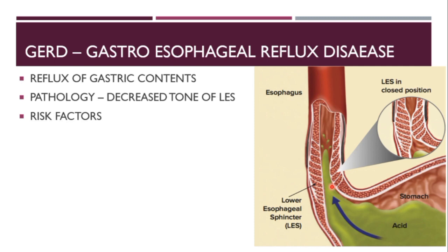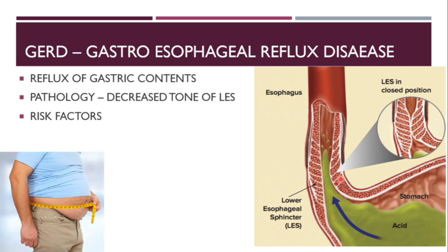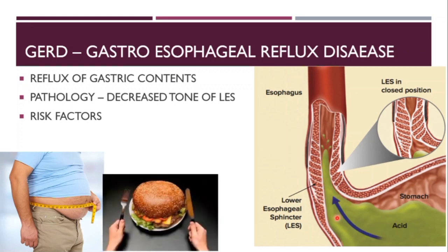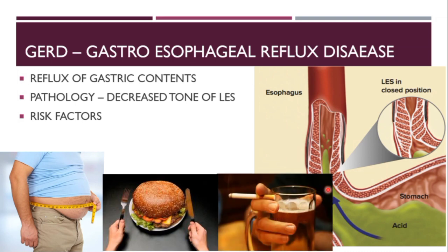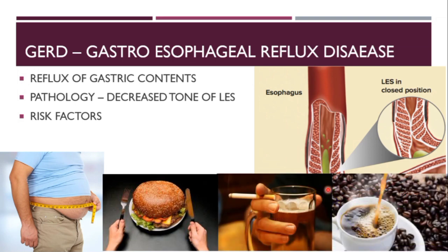What are the risk factors that can decrease the tone of the LES? First is obesity. When you are obese, your intra-abdominal pressure can rise, causing opening of the lower esophageal sphincter. The same thing happens in pregnancy. After a heavy meal, the LES tone can decrease causing GERD. Smoking, alcohol, and caffeine also cause a decrease in the tone of the LES.